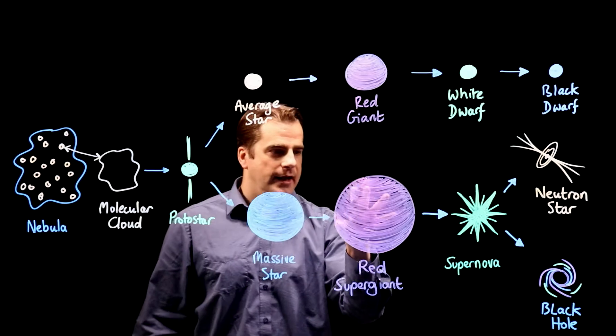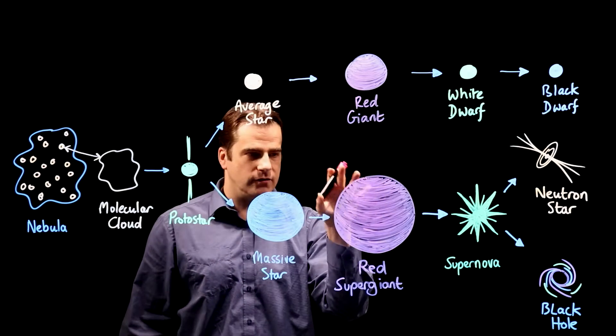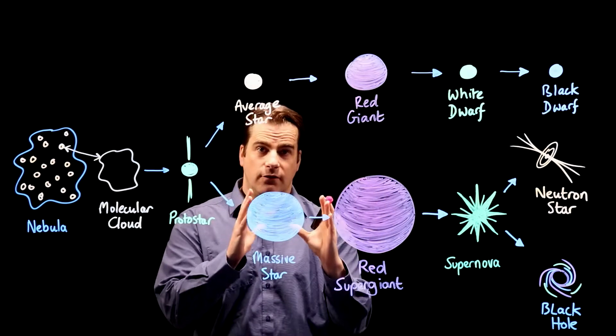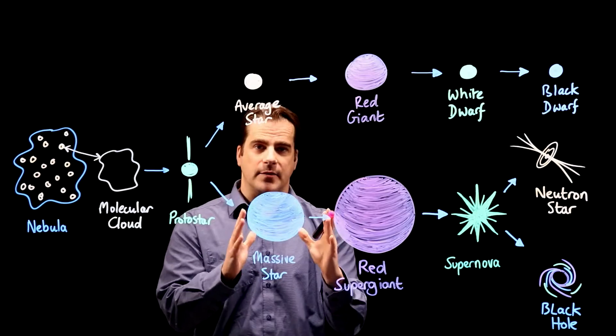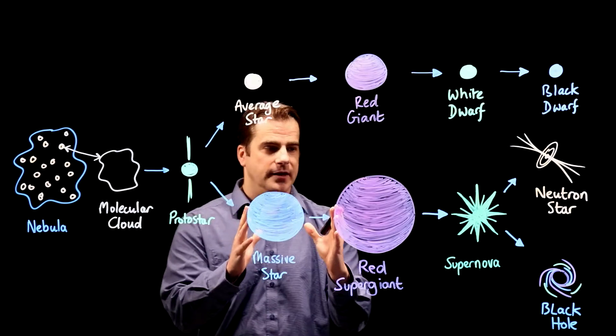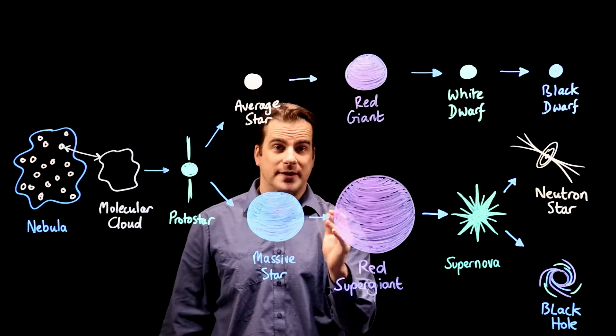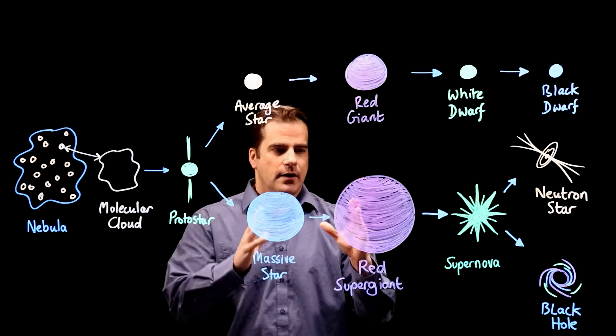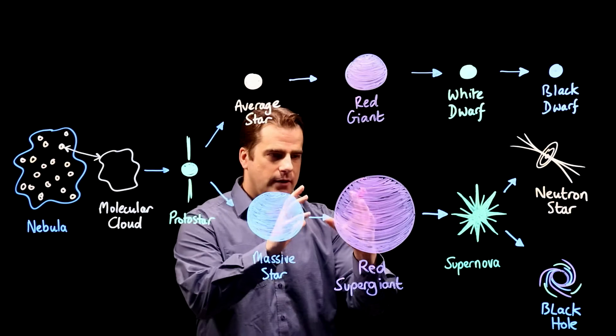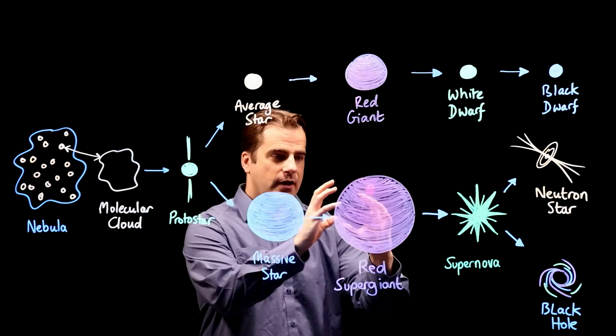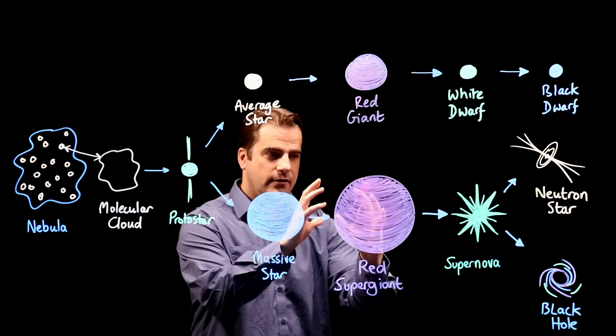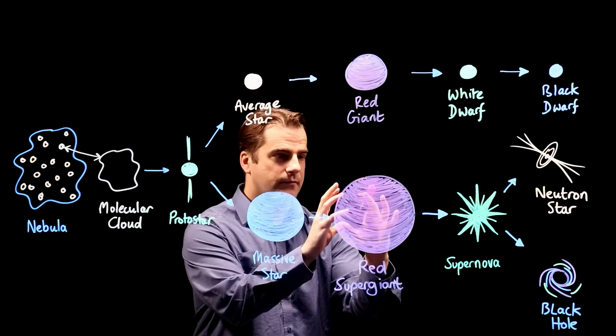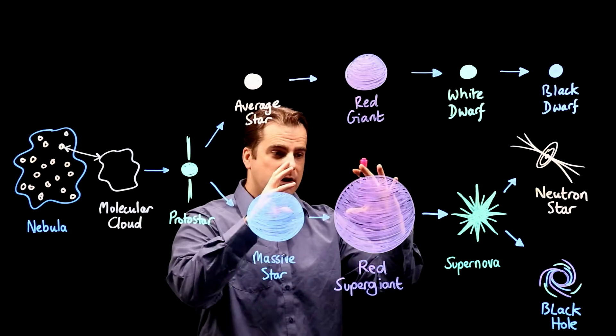Now inside these supergiant, fusion cannot create any elements heavier than iron. Iron is the 26th element in the periodic table. So you end up with an iron core in the red supergiant. And eventually that core collapses.